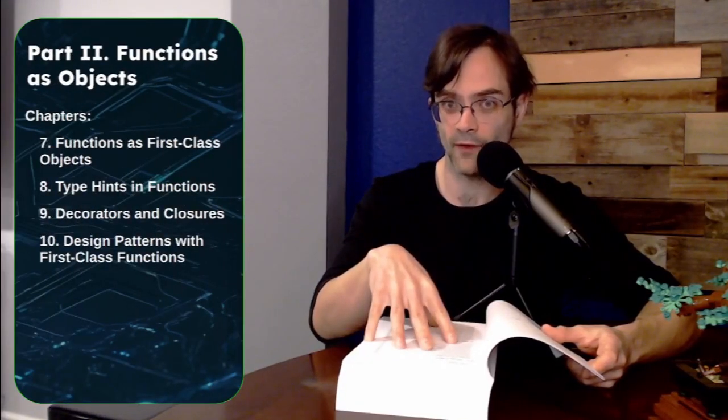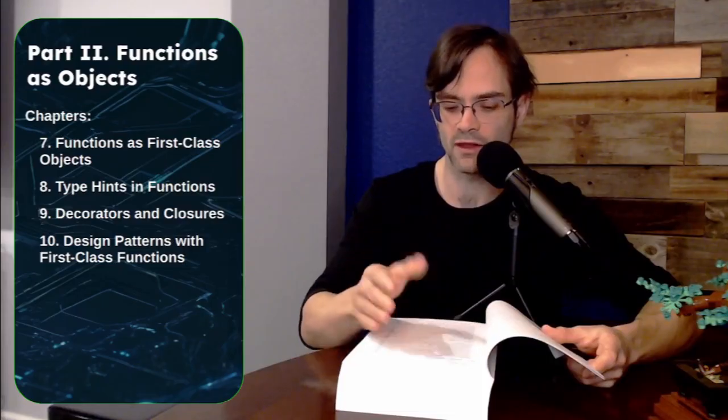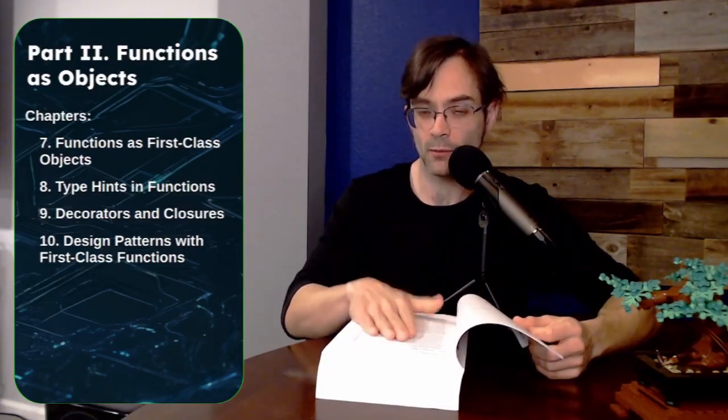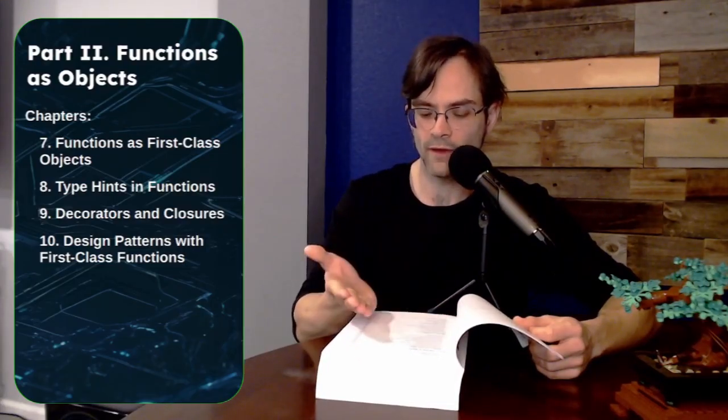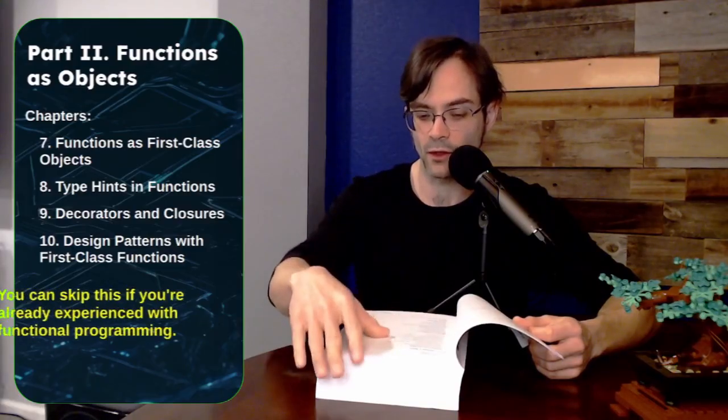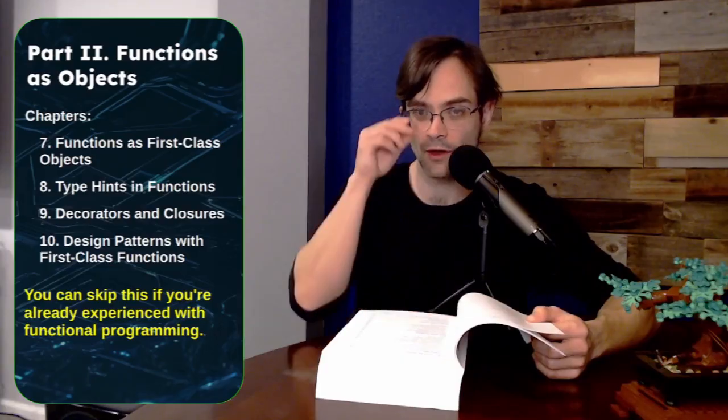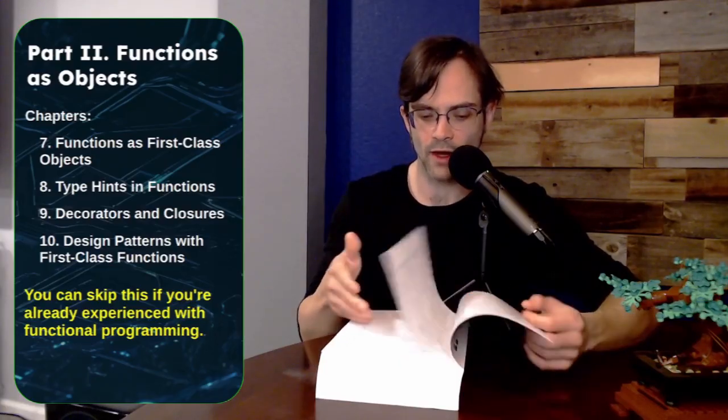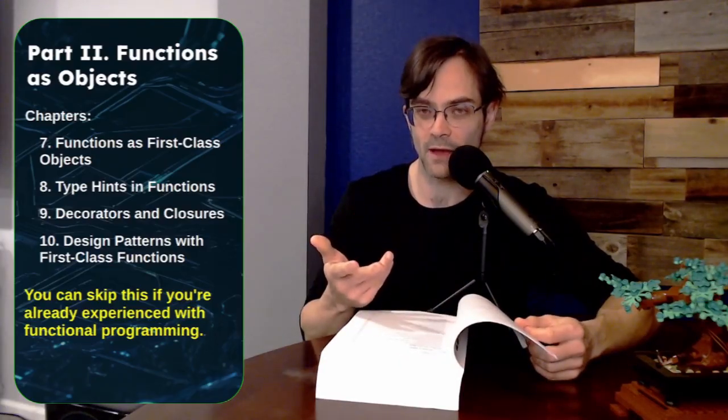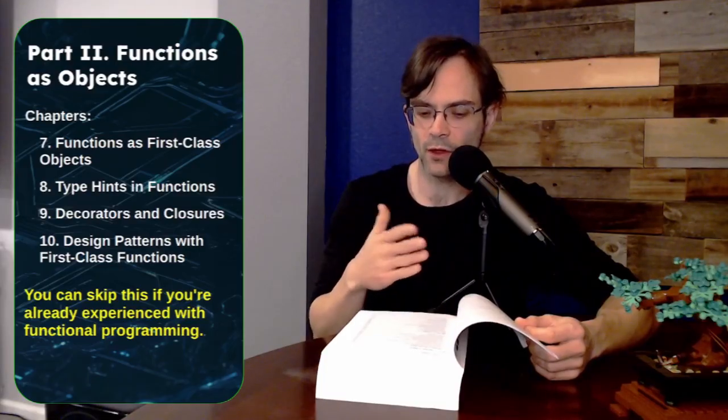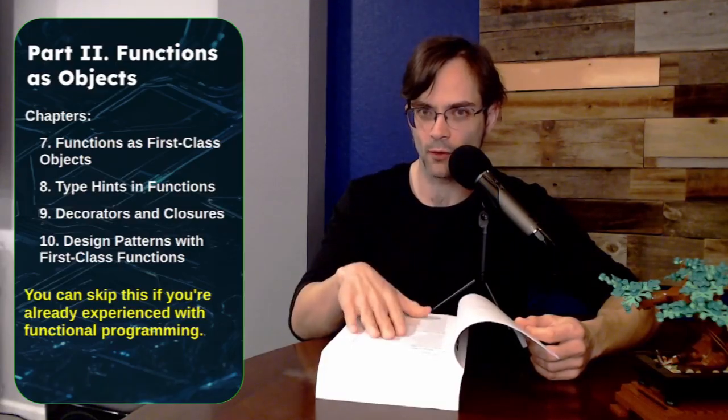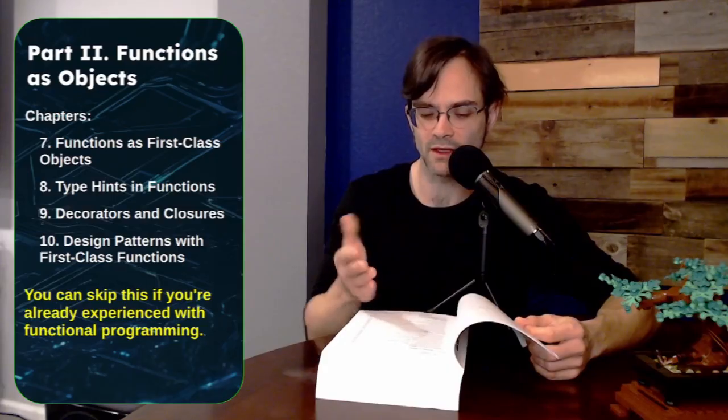Now for most people who are coming to Python from another language or who are kind of intermediate in Python, I'd also recommend part two, which is really about functions in Python and how to use them most effectively. Now some people can probably skip part two. If you're already very comfortable with functional programming or specifically functional programming in Python, you already know what decorators and closures are and how they work, you're already quite comfortable with functions as first class objects, maybe you can skip this section. But if you're coming from a language where functional programming doesn't work as smoothly as it does in Python, you may want to read part two.